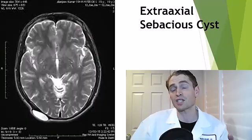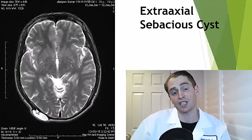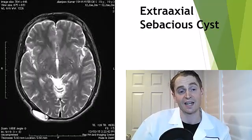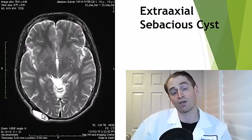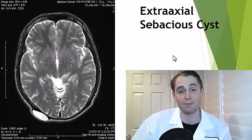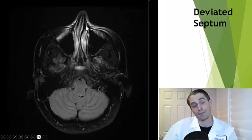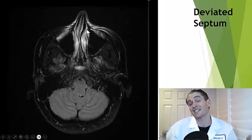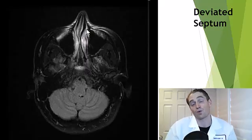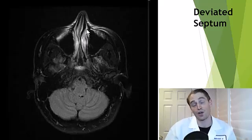Lastly, we sometimes see things outside of the brain. Here is a sebaceous or sweat gland cyst that's actually outside of the skull, though it could be surgically removed if it's causing symptoms. On this MRI, we can see a prominent deviated septum — a fairly common incidental finding, even if the person isn't complaining of any breathing difficulties. Deviated septums are quite common and don't necessarily change the external appearance of the nose.